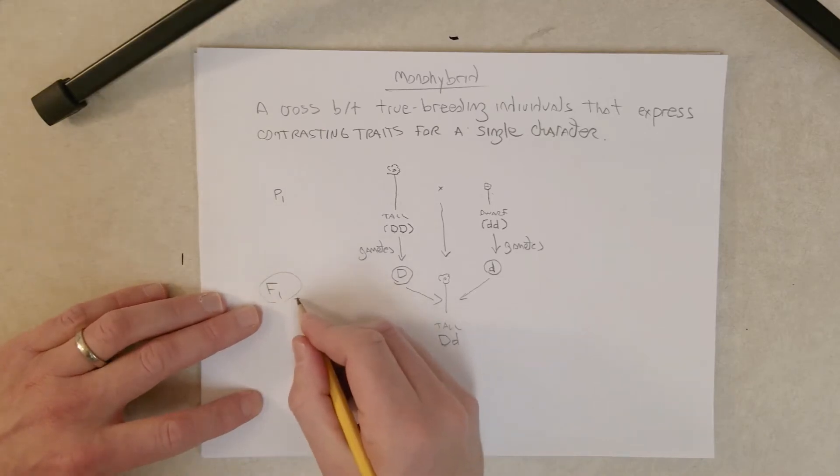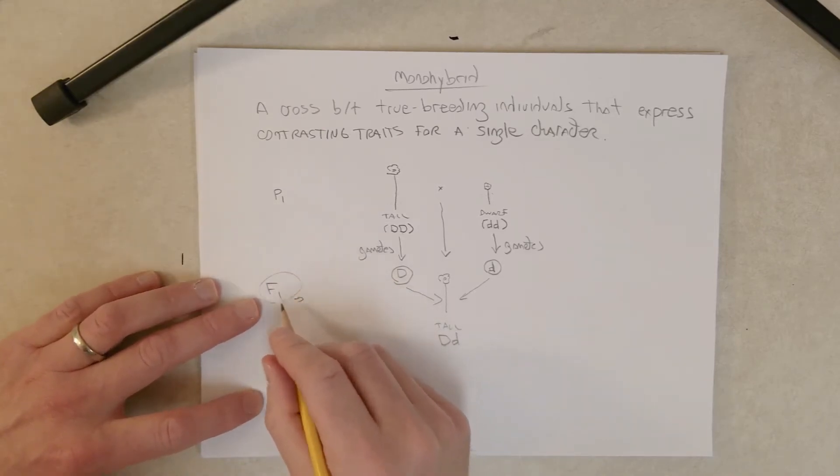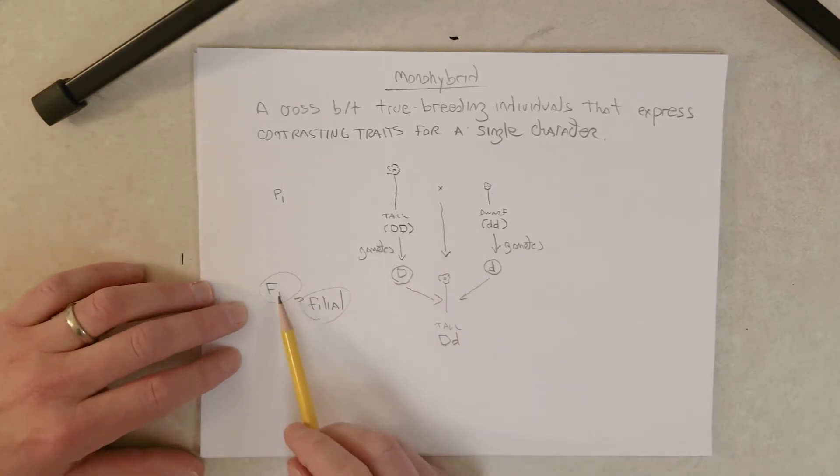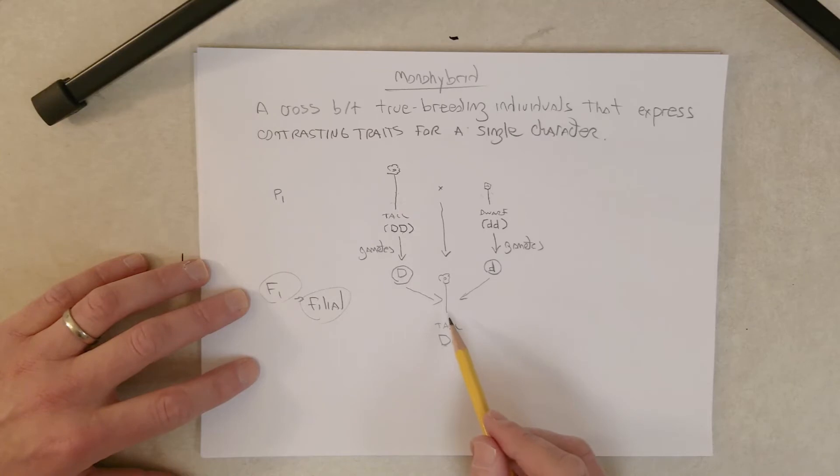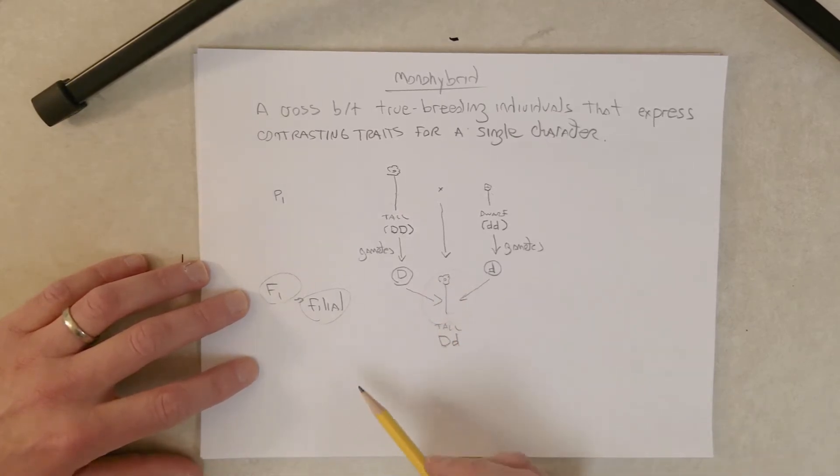Now to get the—just a side note is that this stands for filial, I guess of brothers or of siblings or something, so the first filial generation is the F1. Now to get the F2, what we need to do is take one of these plants here from the F1 and cross it to another plant in the F1.